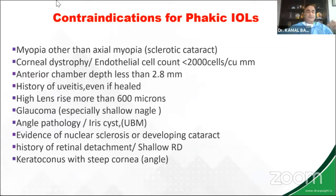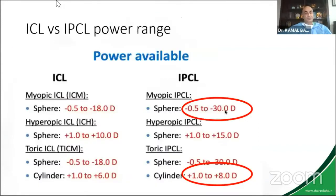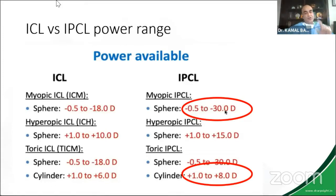Iris cysts — I had two patients with irregular vault where I tried dialing the phakic lens in and had a shifting and tilt, then I did a UBM to realize there was an iris cyst, so I had to expand the lens. History of retinal detachment and keratoconus are also important. Keratoconus is an interesting situation where you have a steeper cornea in the center, good anterior chamber depth, but the angles are not that good. So it's always a great idea not to proceed in a keratoconus patient if you have not done your gonioscopy — that is a warning I've learned.